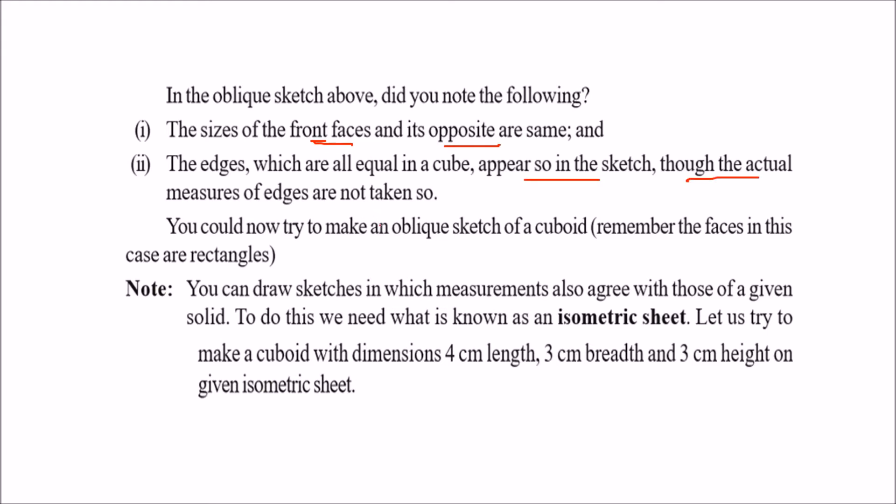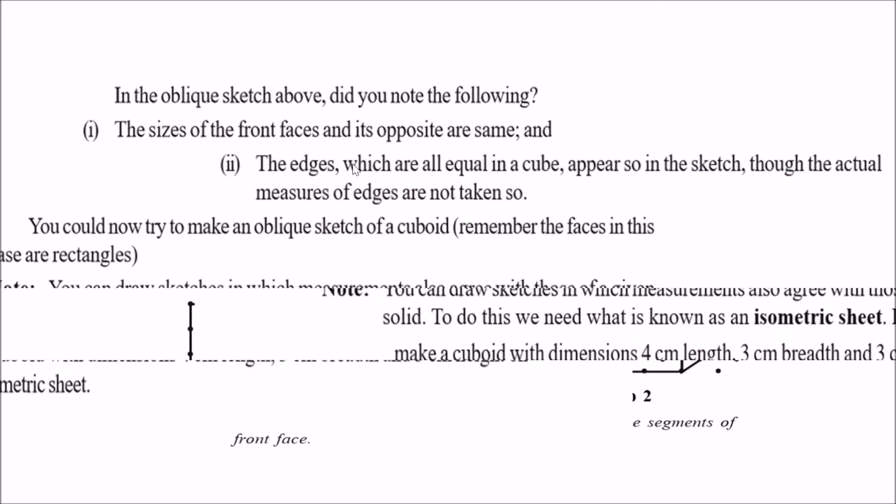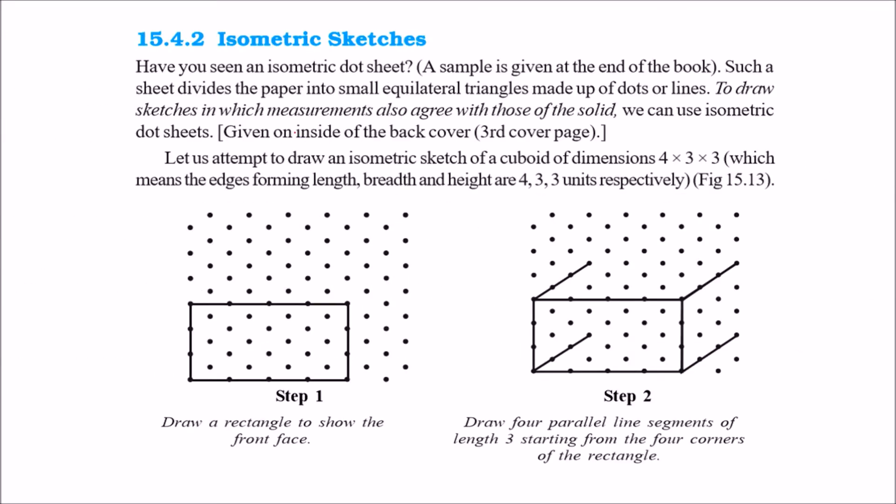This is an oblique view. Now there is another method by isometric sheet. Isometric sheets are nothing but the points which are equally distributed. Plot points are there. If the dimension is 4 by 3 by 3, that is 4 length, 3 breadth, and 3 height, how are you going to make it? These are isometric sketches.